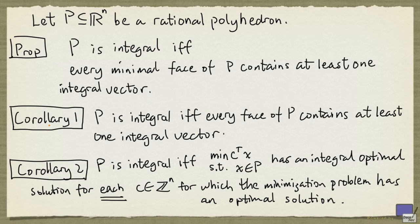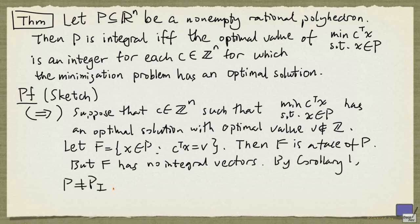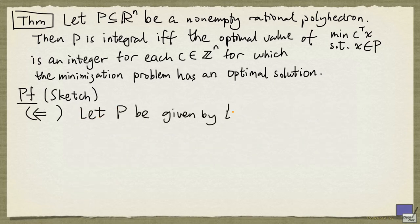So by the first corollary here, we can conclude that p is not integral. Now let's prove the converse of this theorem. First, we write p as follows.